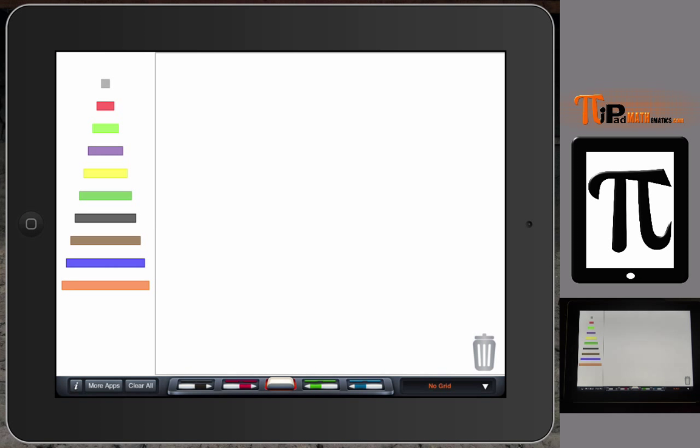Hello, welcome to another video from iPi Pad Mathematics. I am Professor Lam and this app is called Number Rods by Braining Camp. The app models or utilizes the Cuisenaire rods which are one centimeter all the way up to 10 centimeter rods of different colors, and you can explore various things.